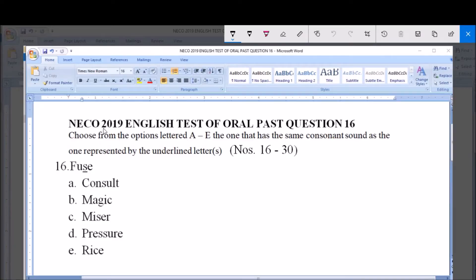Welcome. This is NECO 2019 English Test of Oral, past question. This question is on assisting. We'll be using consonant sounds to answer this question of assisting. What to look out for is a word among the list of options provided that has the same voice sound as the given word, particularly the underlined letter.